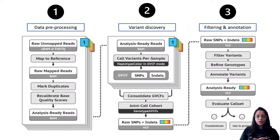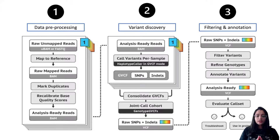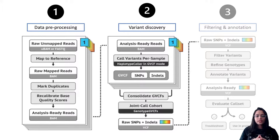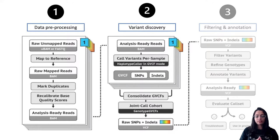For today's demonstration we are going to call germline variants using the GATK germline short variant discovery best practice workflow. This workflow has three steps: data pre-processing to get analysis-ready reads, variant calling using a variant calling algorithm, and finally filtering, annotating, and predicting the effects of those variants on genes. Today we will focus on data pre-processing and calling variants using GATK's HaplotypeCaller to call raw SNPs and indels.